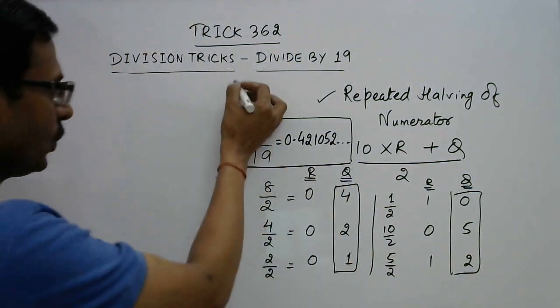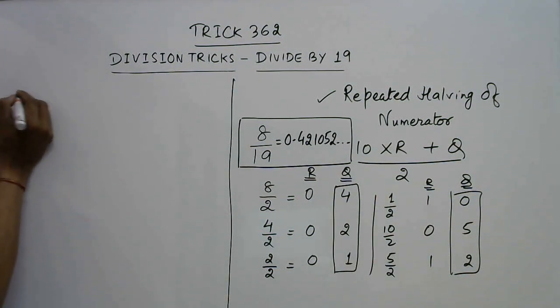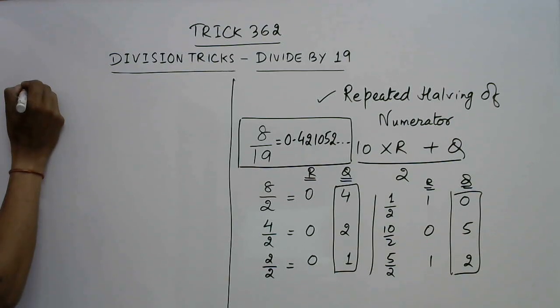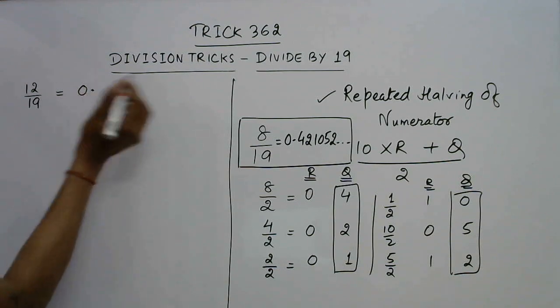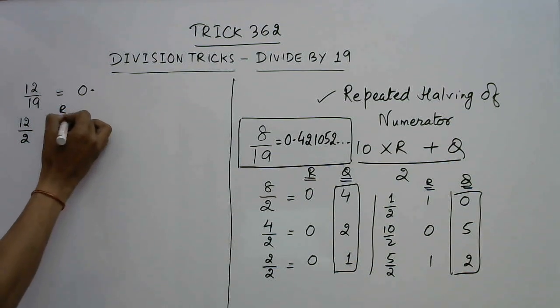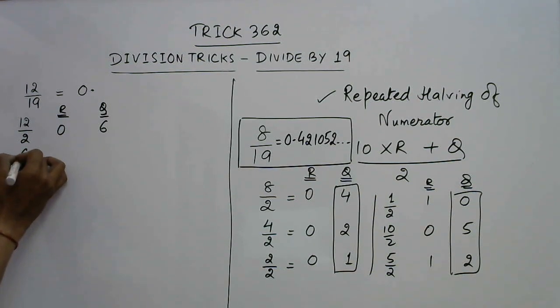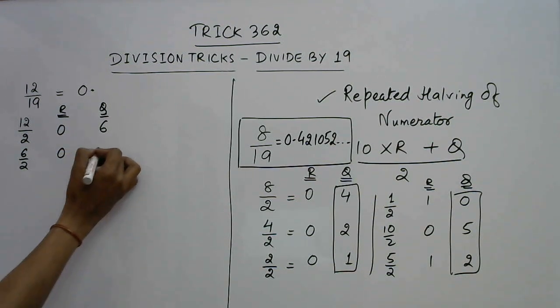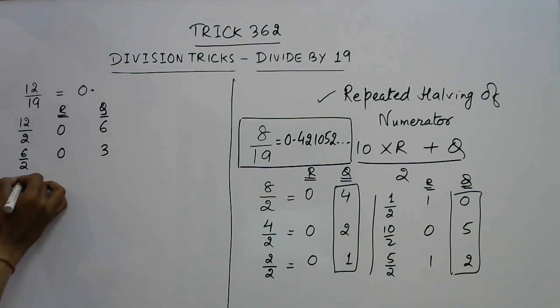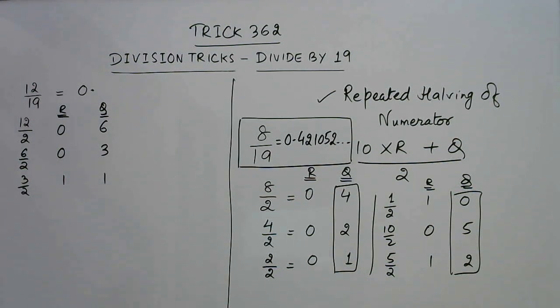Let's have one more example to understand this procedure in a better way. Suppose we have 12 upon 19, and write the answer here: 0 point something. Now see, 12 divided by 2 gives a remainder of 0 and quotient 6. 6 divided by 2 gives a remainder 0, quotient 3. 3 divided by 2 gives a remainder 1 and quotient 1.